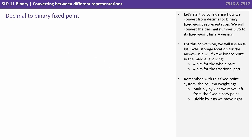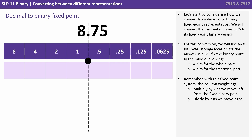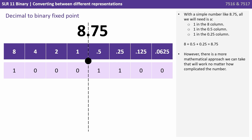Let's start by considering how we convert from decimal to binary fixed point representation. We'll convert the decimal number 8.75 to its fixed point binary version using an 8-bit storage location, fixing the binary point in the middle — 4 bits for the whole part and 4 bits for the fractional. The column weightings multiply by 2 moving left from the binary point and divide by 2 moving right. For 8.75 we need a 1 in the 8 column, a 1 in the half column, and a 1 in the quarter column.